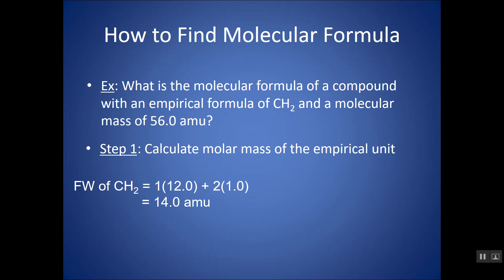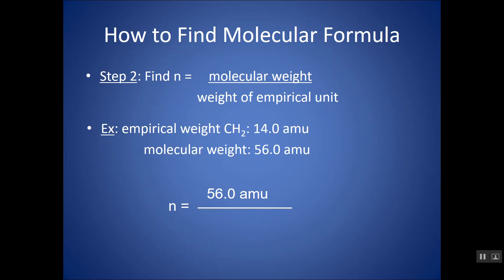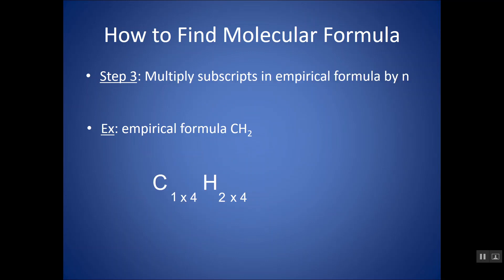When I divide the two masses, those units should go away. So I'm dividing 56 by 14, I get 4. So all I'm going to do is multiply my original subscripts of the empirical formula by 4, and I get C4H8.